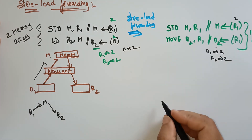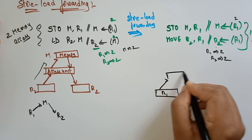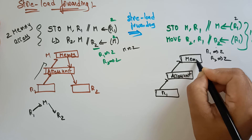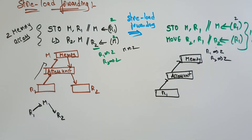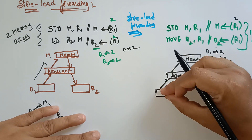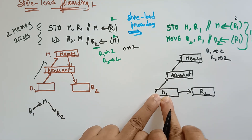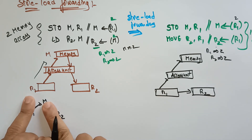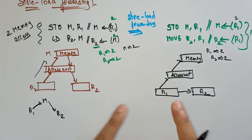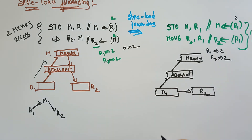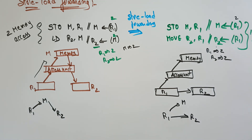Looking at the updated diagram: the data from r1 first goes to the access unit. It has to be stored in memory because it is needed for future operations. But simultaneously, the r1 data is also being sent directly to r2. Previously, the data went r1 → memory → r2 with two accesses. Now with forwarding, r1 sends data to memory as well as directly to r2 — only one memory access.